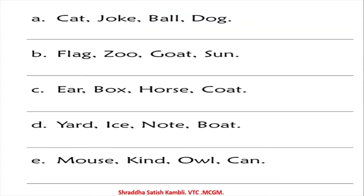Let us now look at some examples. You have CAT, JOKE, BALL, and DOG. Which word will come first? Ball will come first because it starts with B. After B you have C, so cat comes next, then dog, and finally joke. So the order is ball, cat, dog, joke.